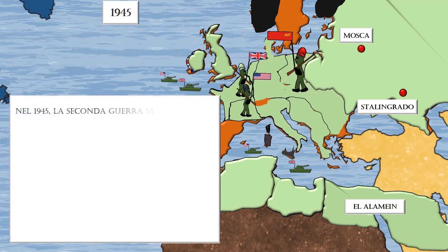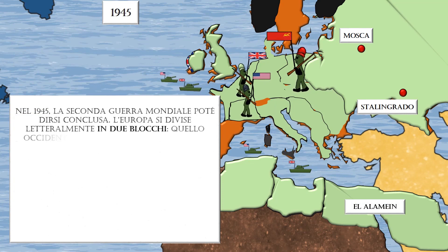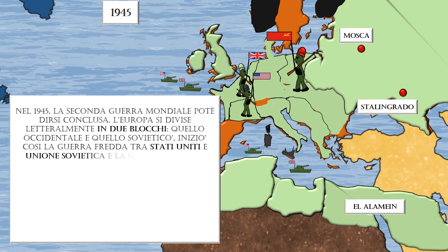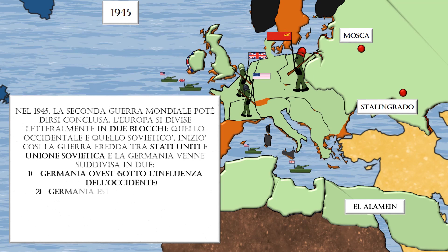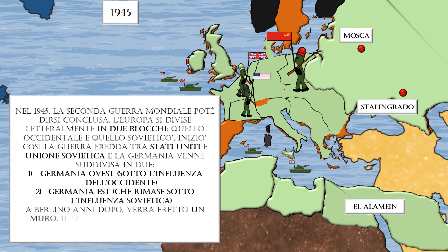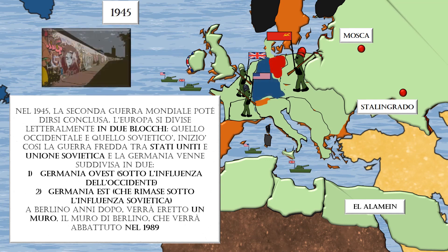In 1945, World War II in Europe came to an end. Europe was literally divided into two blocs: the Western and the Soviet blocs. This began the Cold War between the United States and the Soviet Union. Germany was divided into two parts — West Germany, under the influence of the West, and East Germany, which remained under Soviet influence. Later, a wall would be erected in Berlin — the Berlin Wall — which would be torn down in 1989.